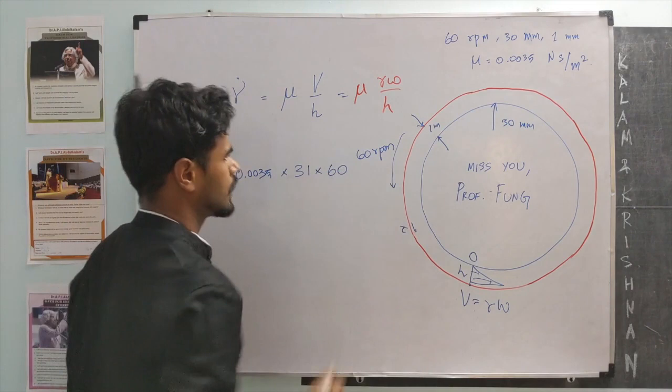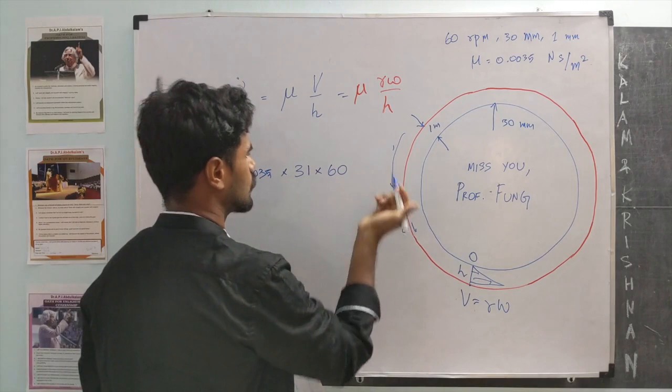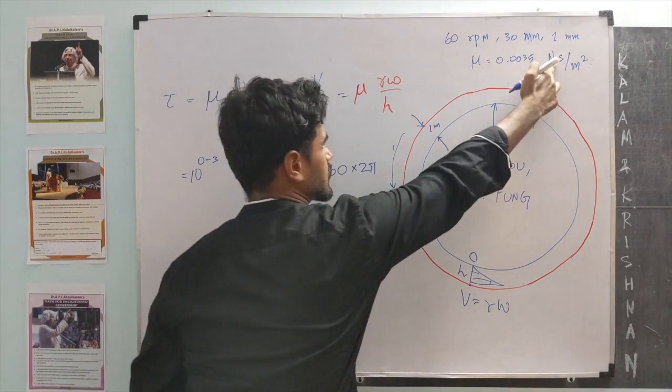The 60 is 60 revolutions per minute. So, number of radians per minute is into 2 pi. We want things in terms of seconds. So, a minute has 60 seconds, that over 60.